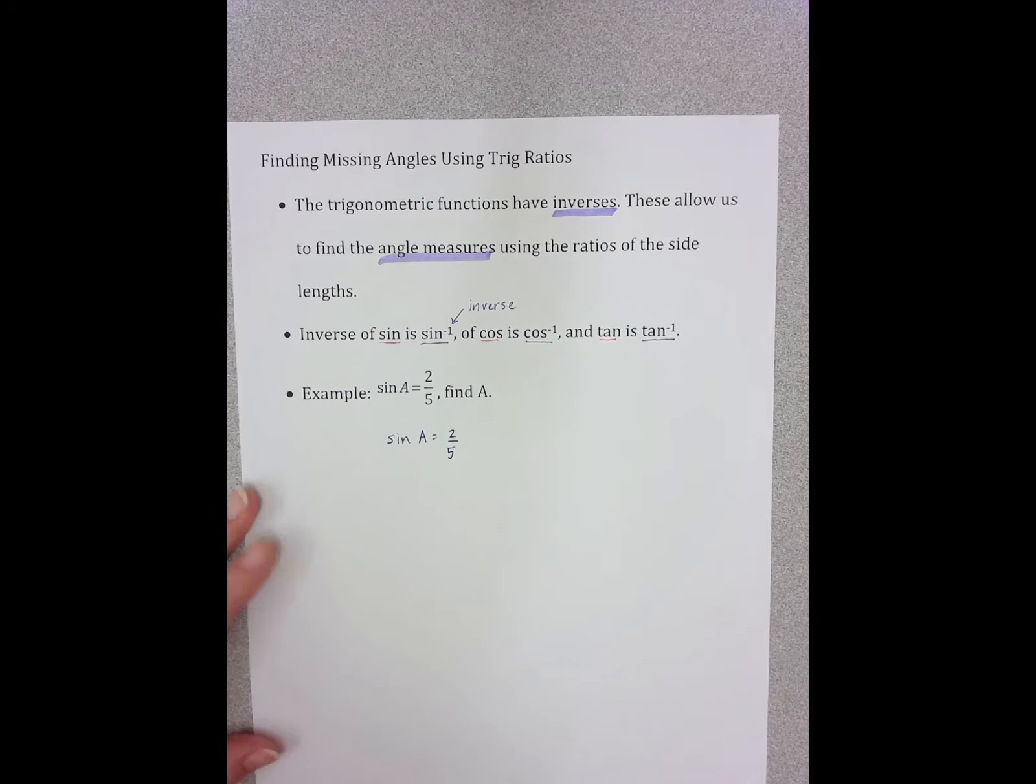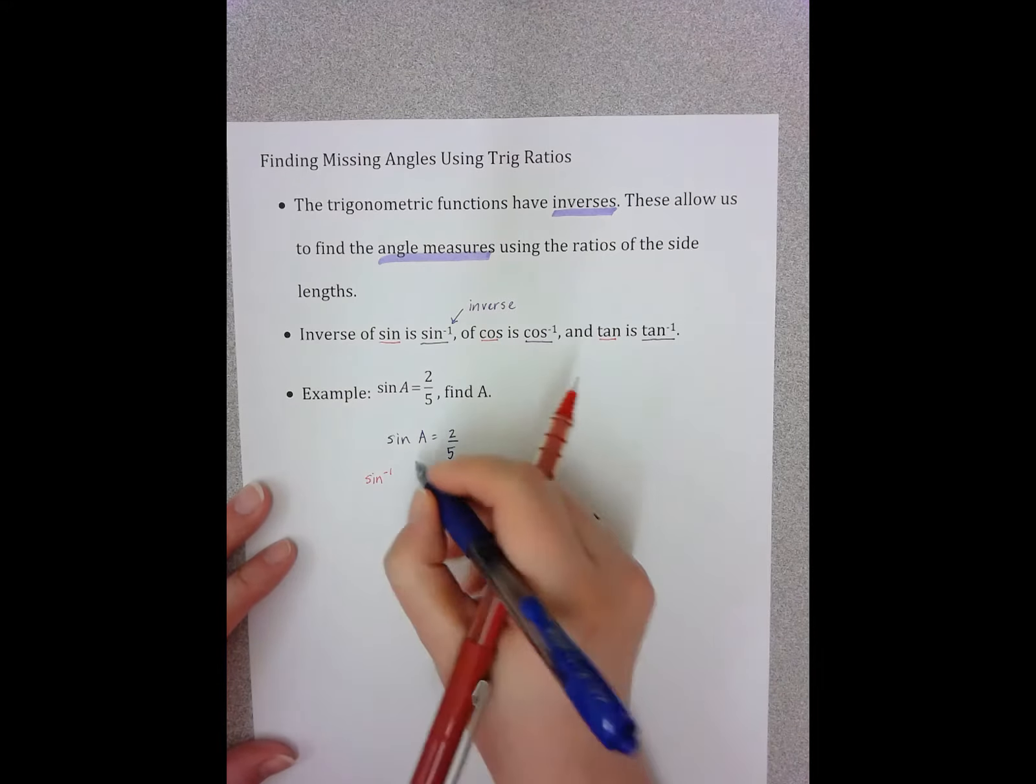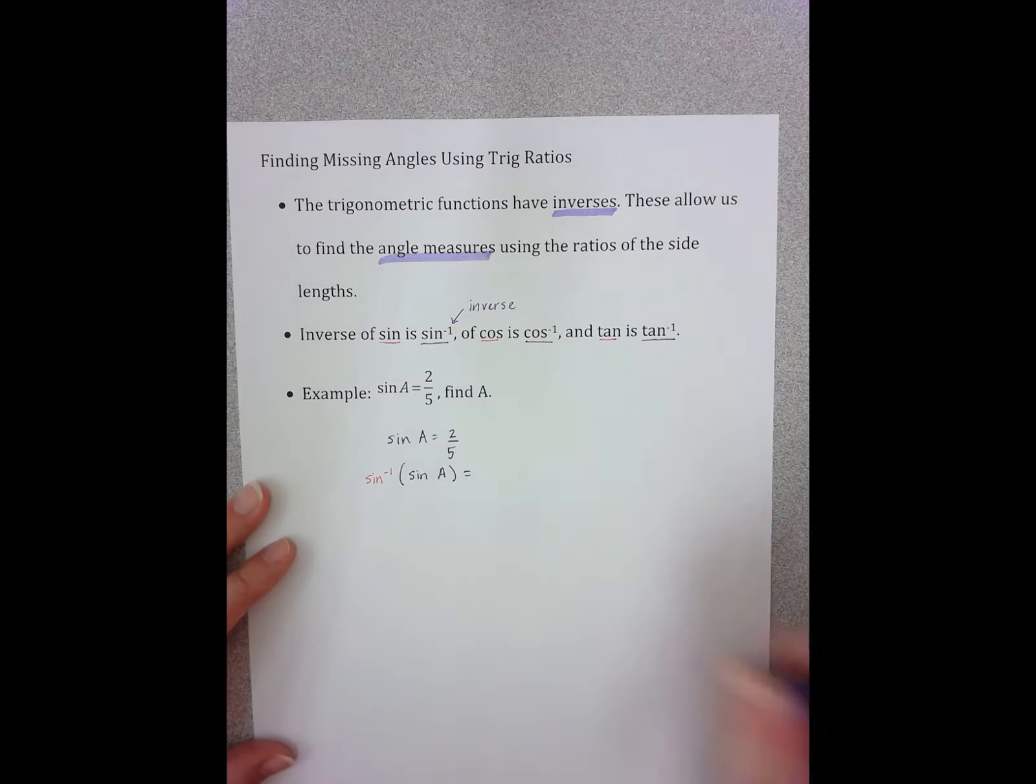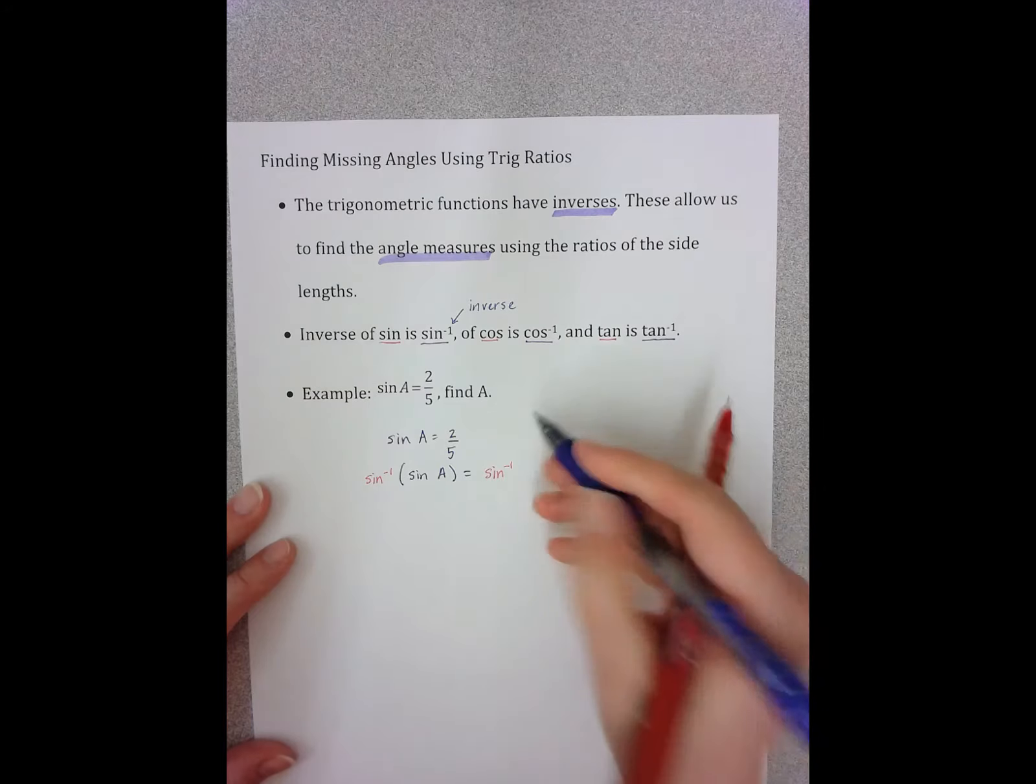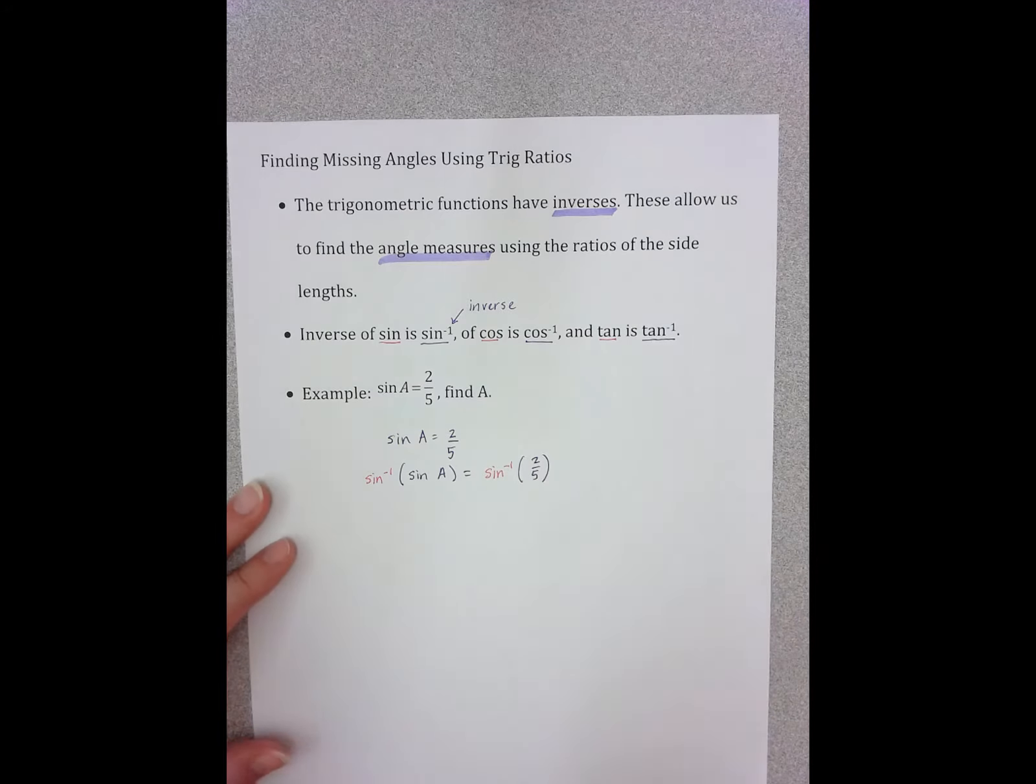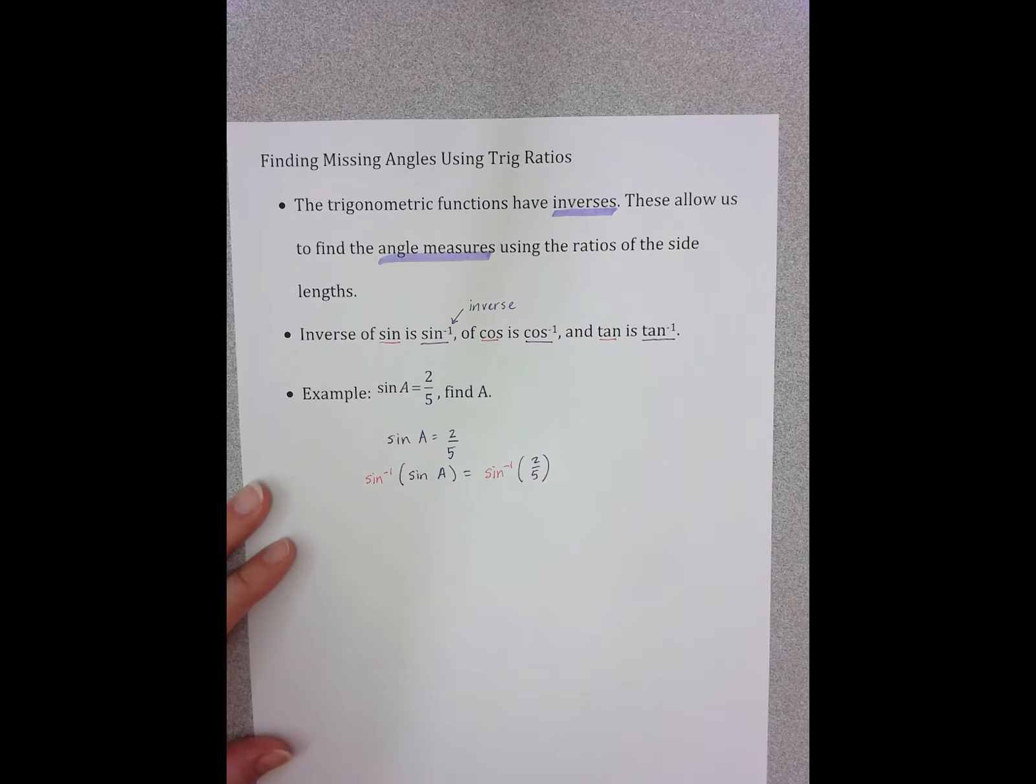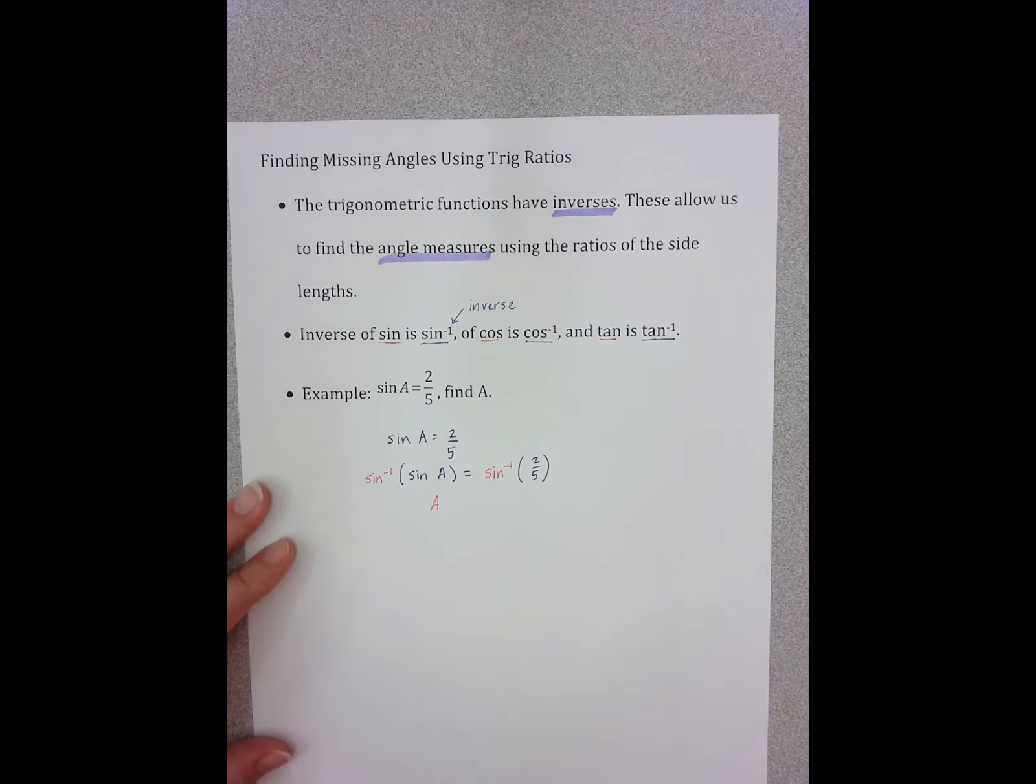So I start with my equation that I'm given, sine A equals 2 fifths. I then take the inverse of both sides. So sine inverse of sine A equals sine inverse of 2 fifths. Now the sine inverse of sine leaves me with A.